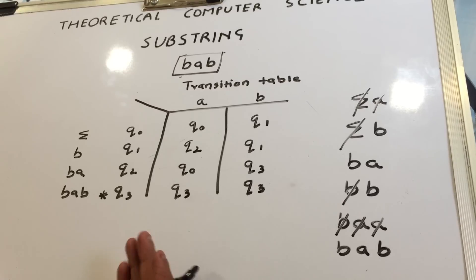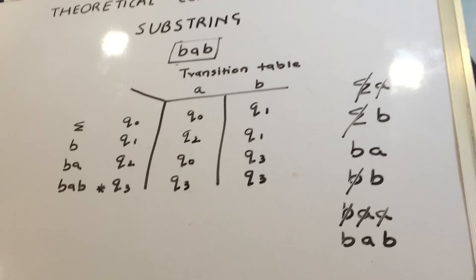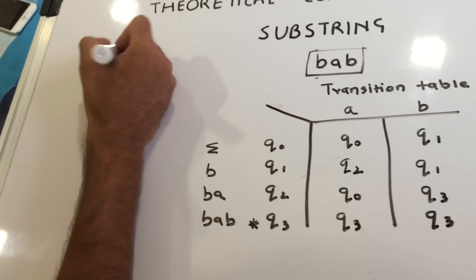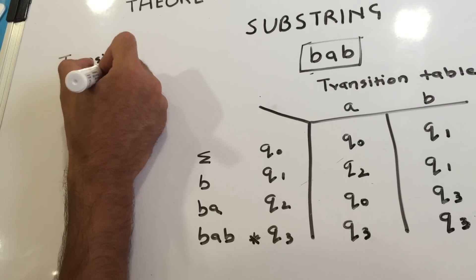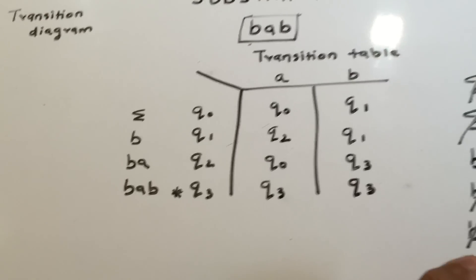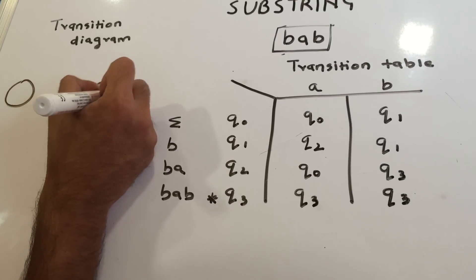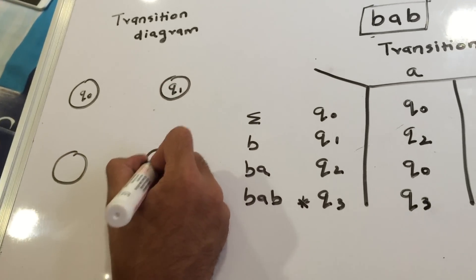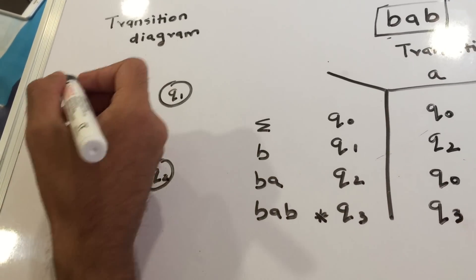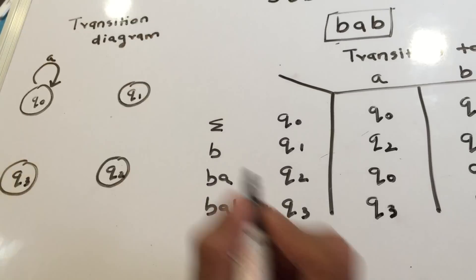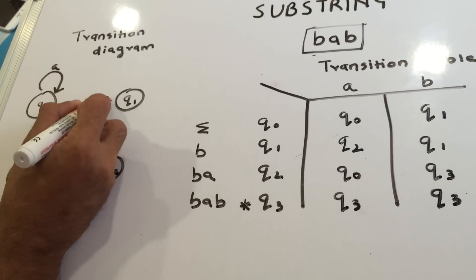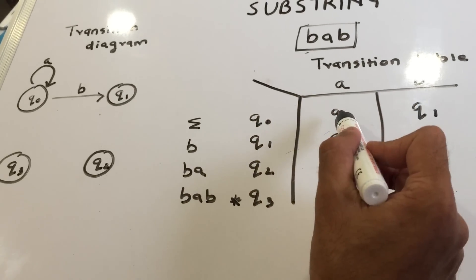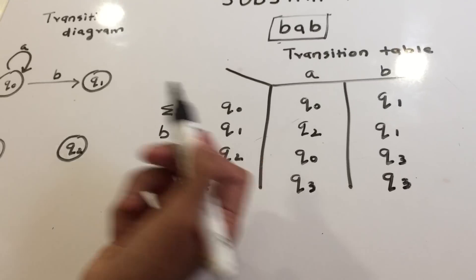Looking at this transition table, I'm going to draw the transition diagram now. I have four states — q0, q1, q2, and q3. From the table: in q0, if I get input 'a' I remain in q0; if I get 'b' I go to q1. So I draw a self-loop on q0 for 'a' and an arrow from q0 to q1 for 'b'.